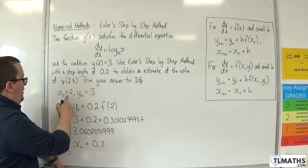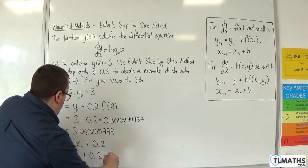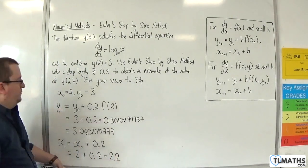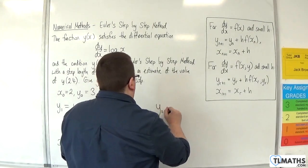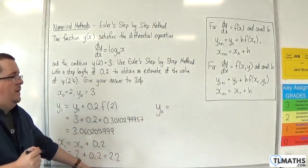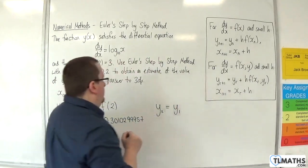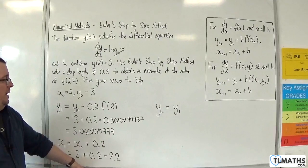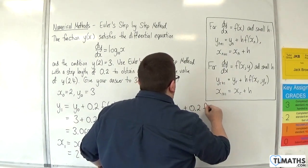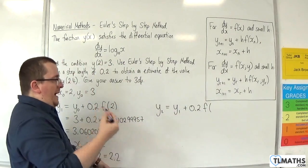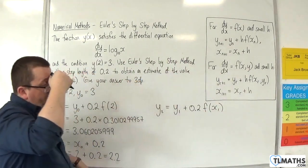So y2 is the previous term, y1, plus the step length, 0.2, times by f of x1.